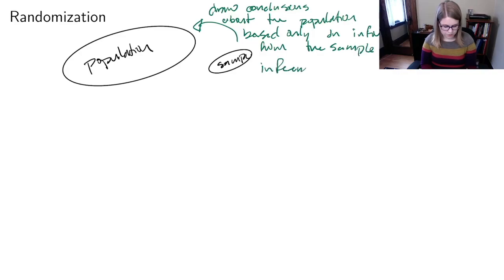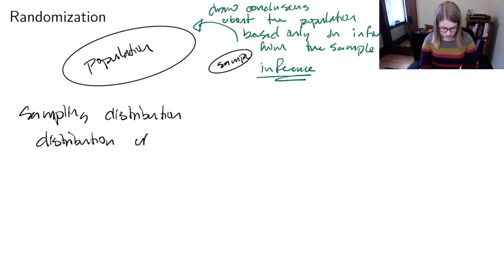We call that inference, and a lot of what inference involves is thinking about a sampling distribution. A sampling distribution is a distribution of a statistic under a hypothesis.